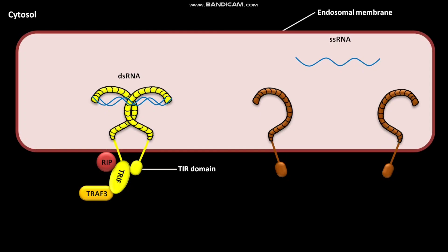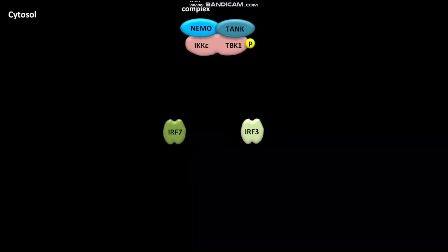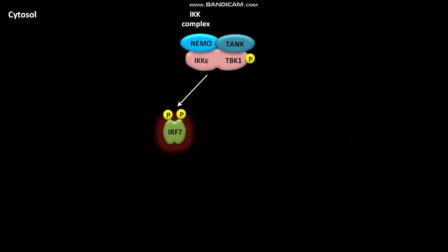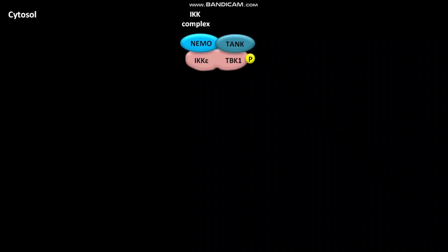The active IKK complex causes phosphorylation of inactive IRF7 and IRF3. Due to this phosphorylation, IRF7 and IRF3 become active. Active IRF3 remains in the cytosol, and active IRF7 moves towards the nucleus.